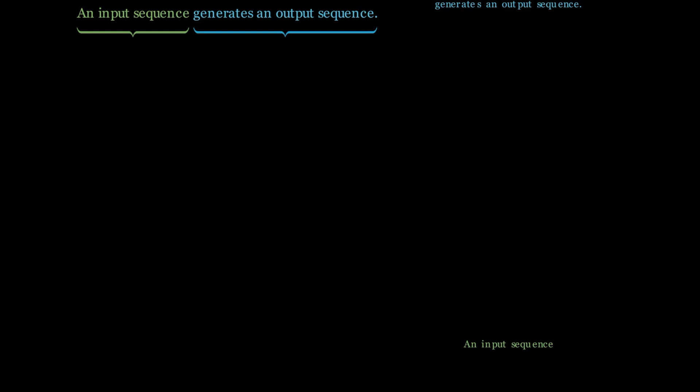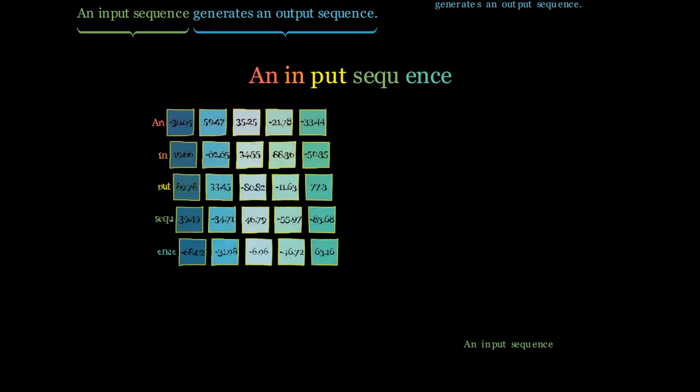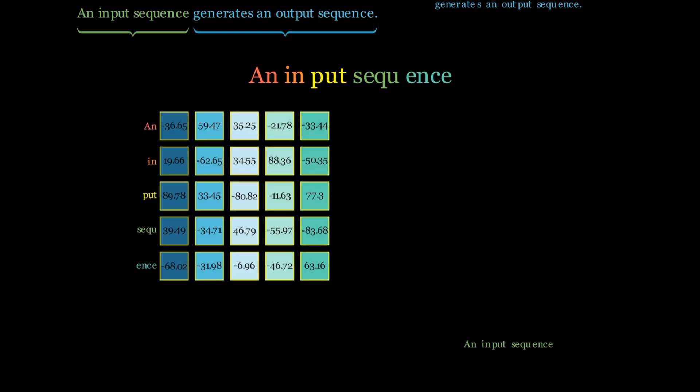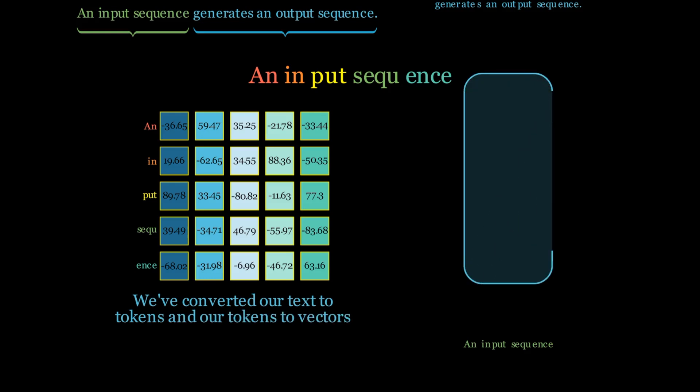Before we feed the input sequence into the model, first we need to tokenize it. We split the words into subword tokens and transform the tokens into vectors. We also apply a positional encoding to the tokens to preserve their position in the sequence. This transforms the words into a matrix of floating point numbers. In reality, this matrix will be way larger than the one you see on your screen.